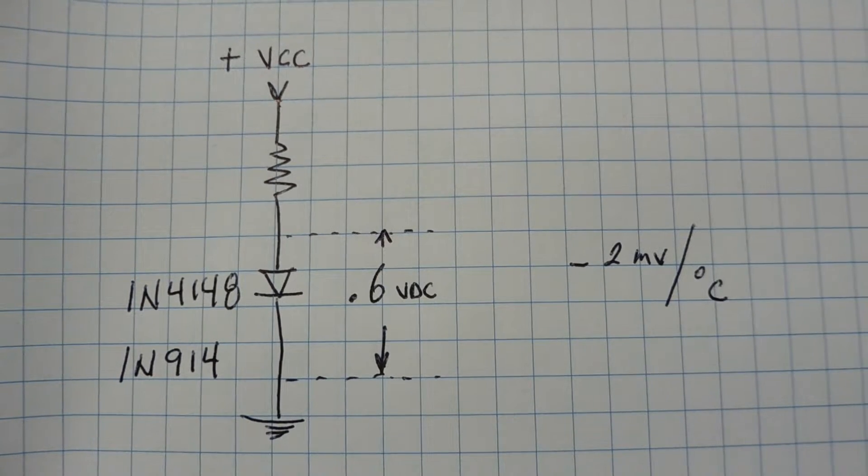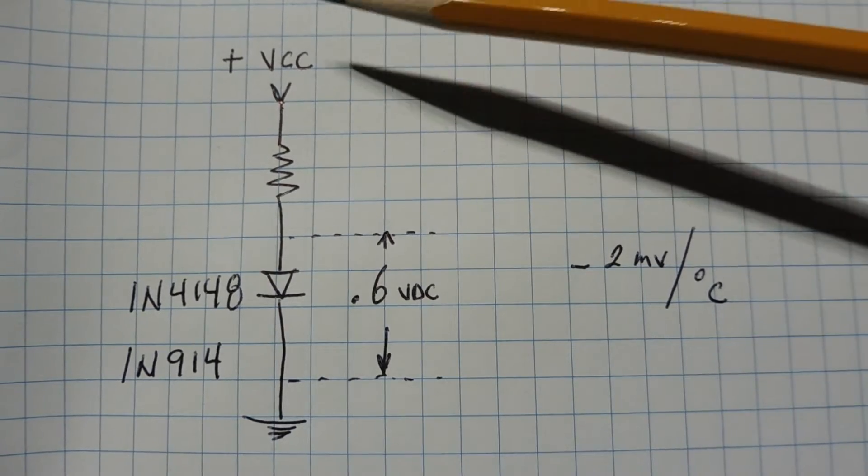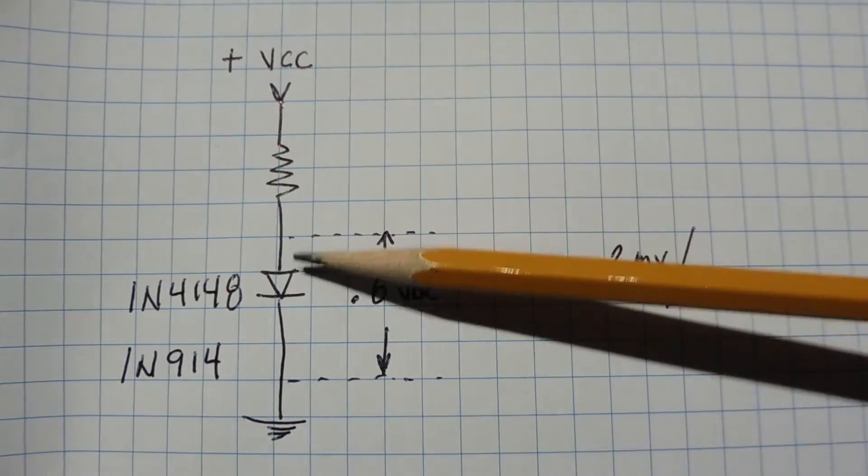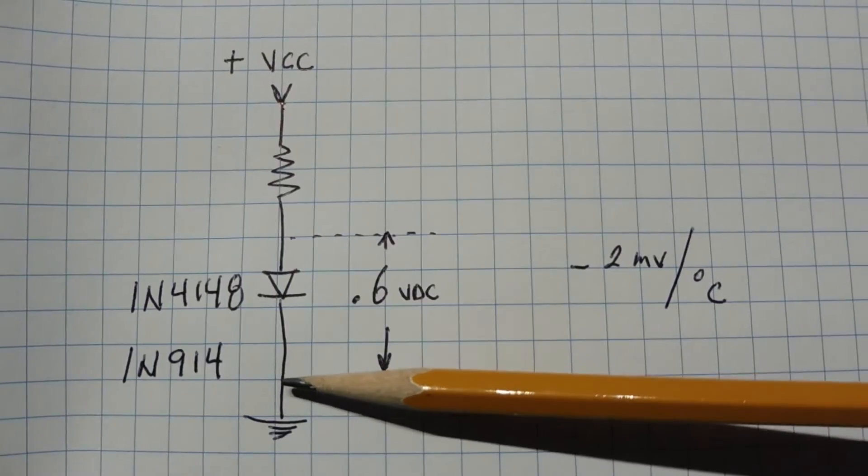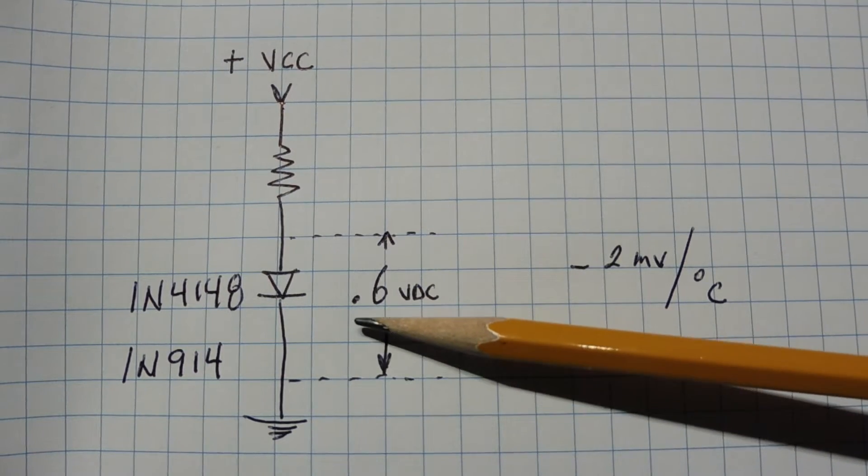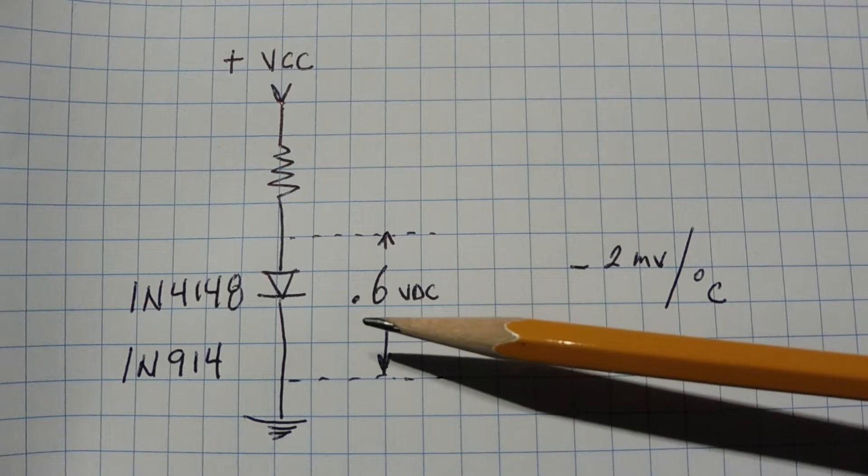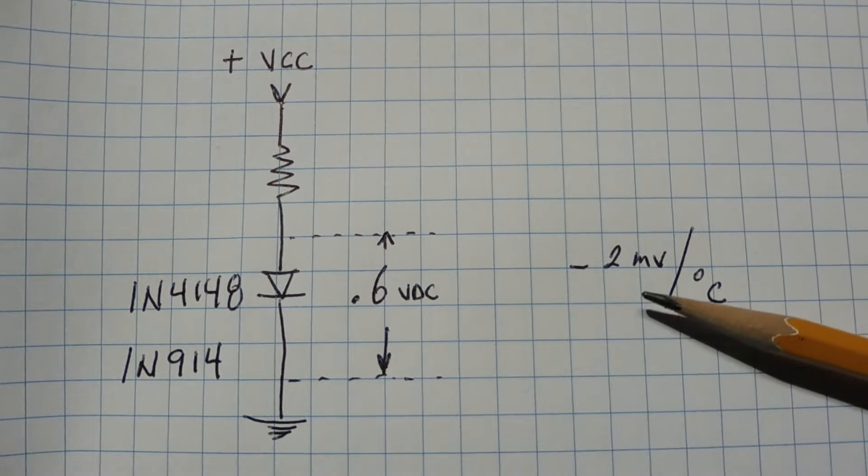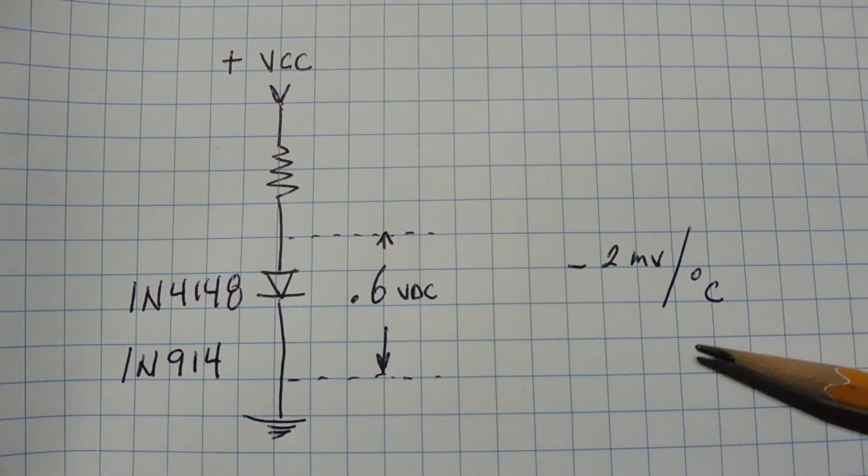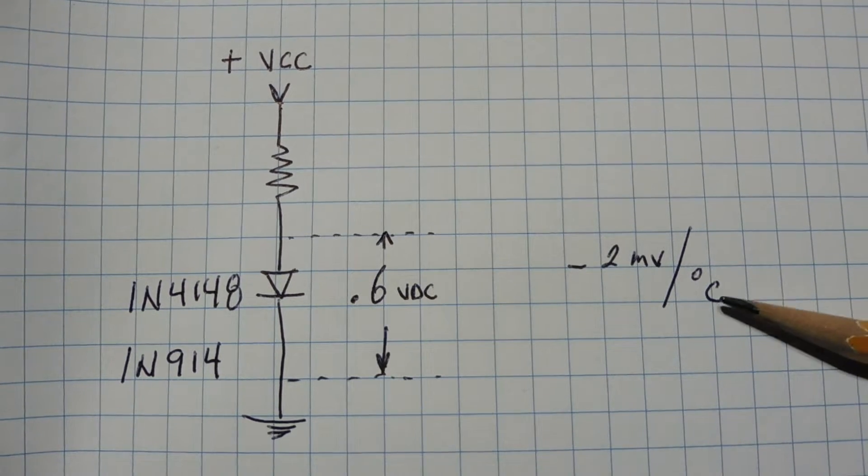If we take one of these diodes and forward bias it, applying a positive voltage across the diode with enough current flowing through to turn it on, we will get a 0.6 volts DC drop across the diode. This voltage drop will vary with temperature, minus 2 millivolts per degree Celsius. It has a negative temperature coefficient. For every 1 degree Celsius increase, we get a minus 2 millivolt drop across the diode.